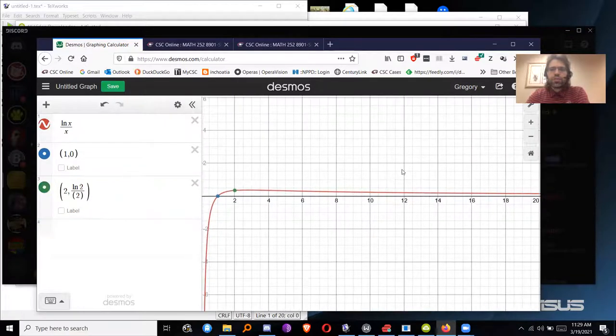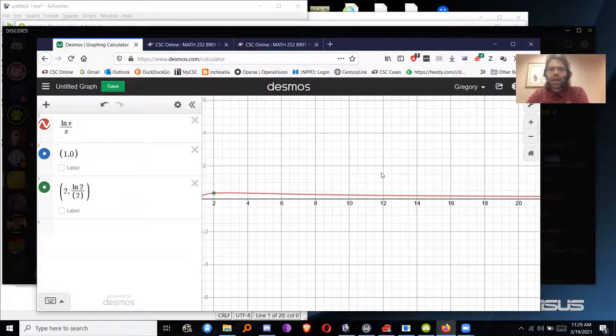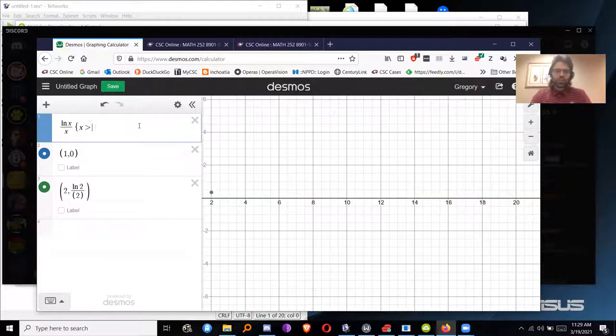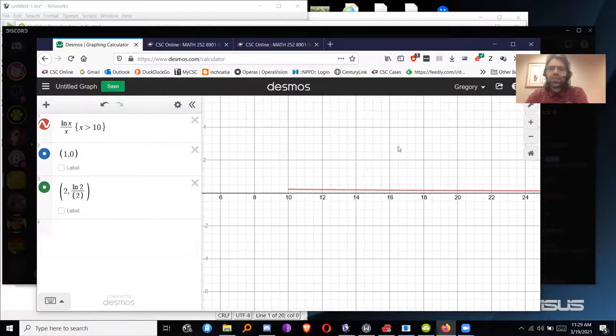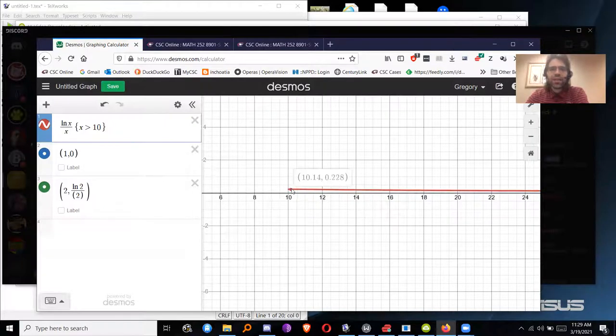Here's where the fact is useful that it doesn't matter where a series starts. It doesn't change convergence. So we could start at n equals 10, let's say. And if we start at 10, now this is always decreasing and always positive. And we can use the integral test.